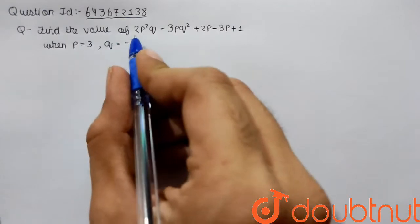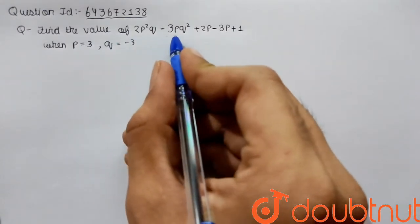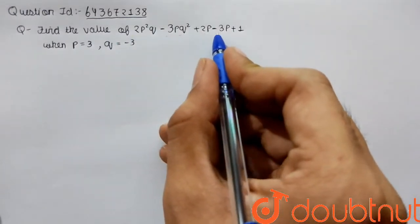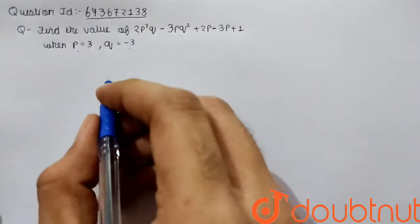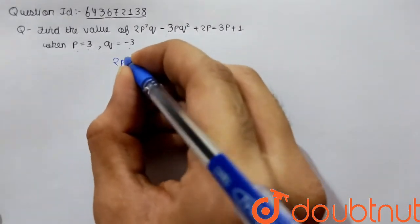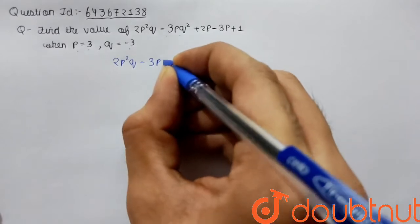The given question is: find the value of 2p²q - 3pq² + 2p - 3p + 1 when p is 3 and q is -3. So the given equation is 2p²q - 3pq² + 2p - 3p + 1.